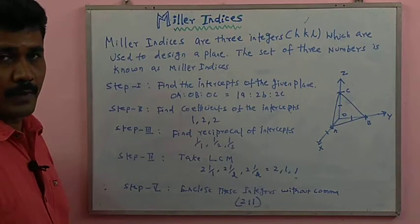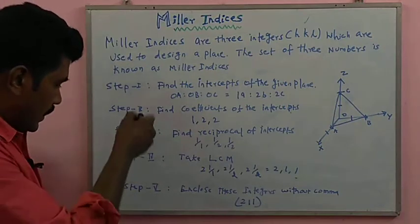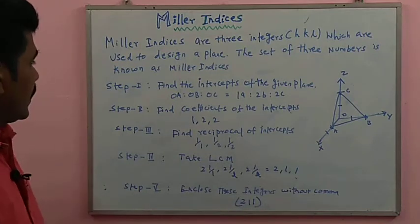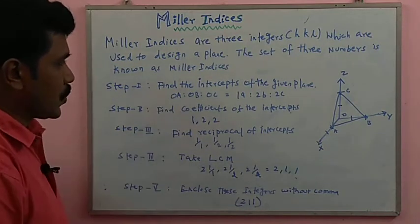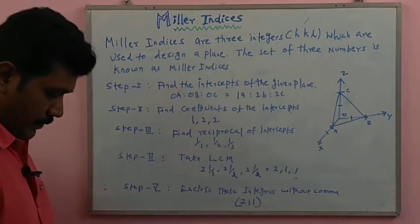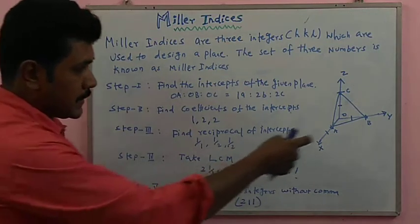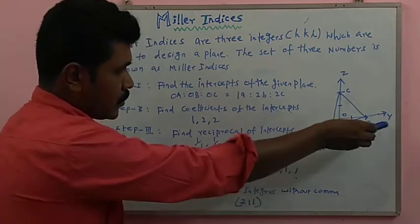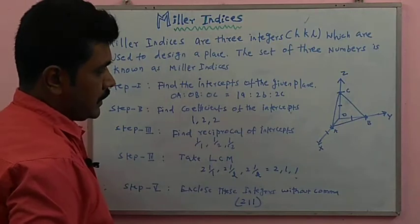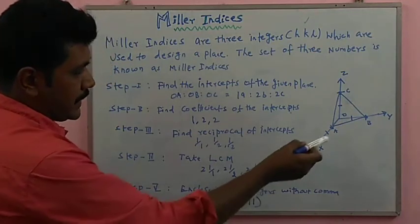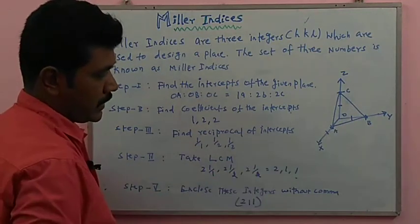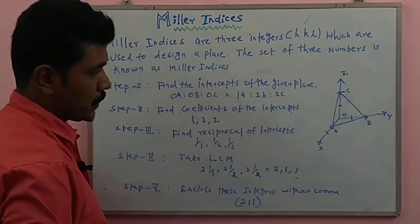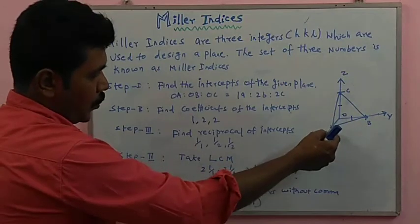There are five steps to find the Miller indices. Step one: find the intercepts of the given plane. Here is a structure with three axes — x-axis, y-axis, and z-axis. For example, x-axis length is one unit, y-axis length is two units, and z-axis length is two units.